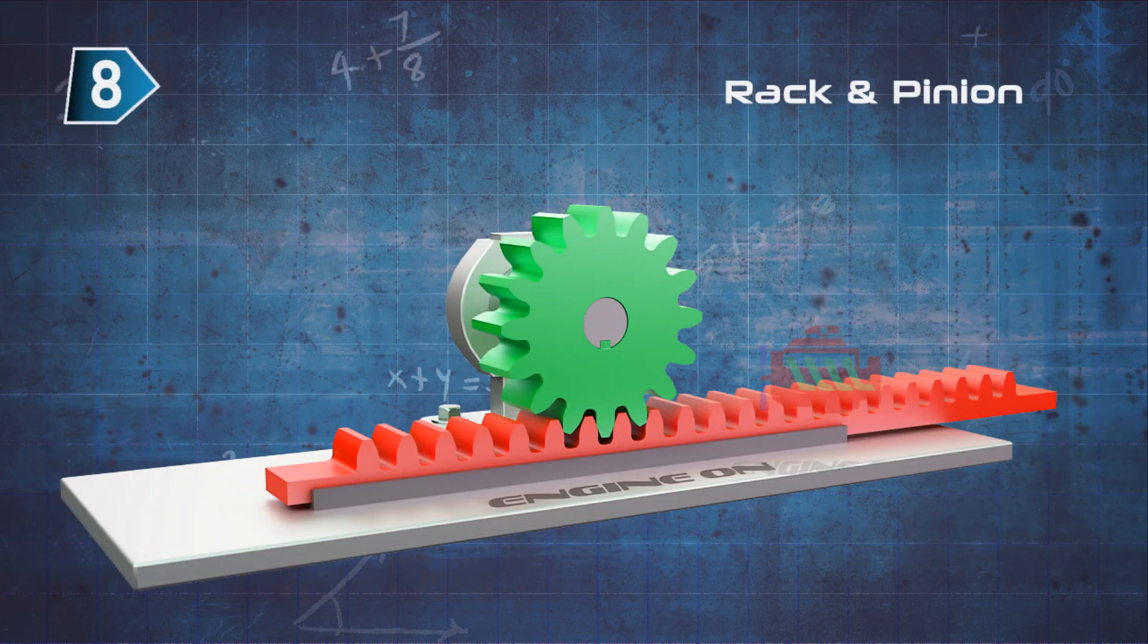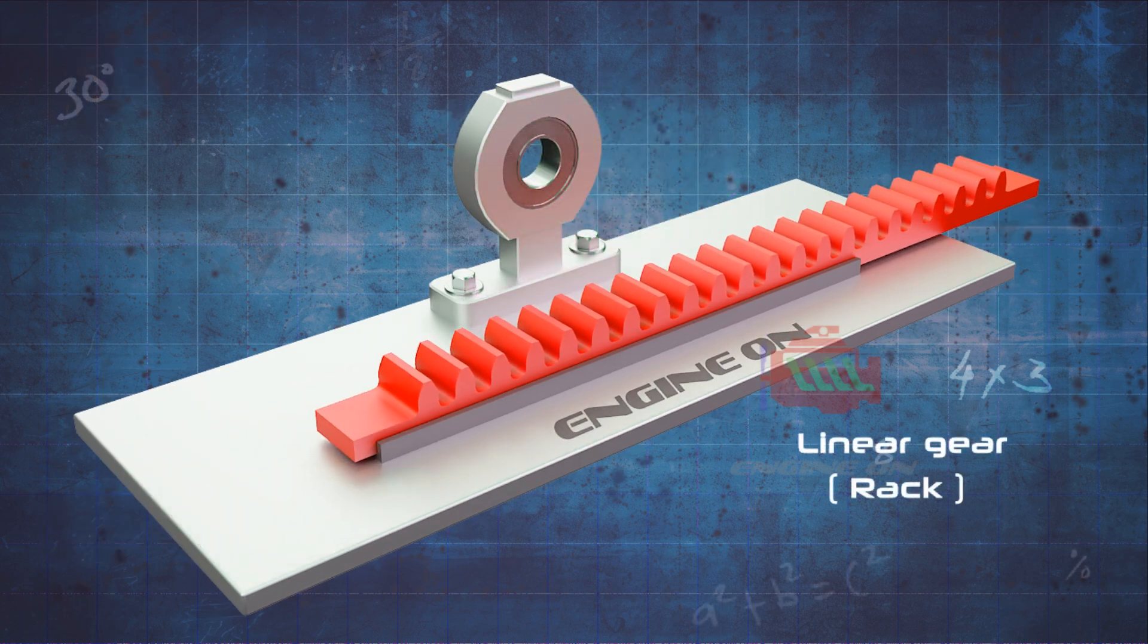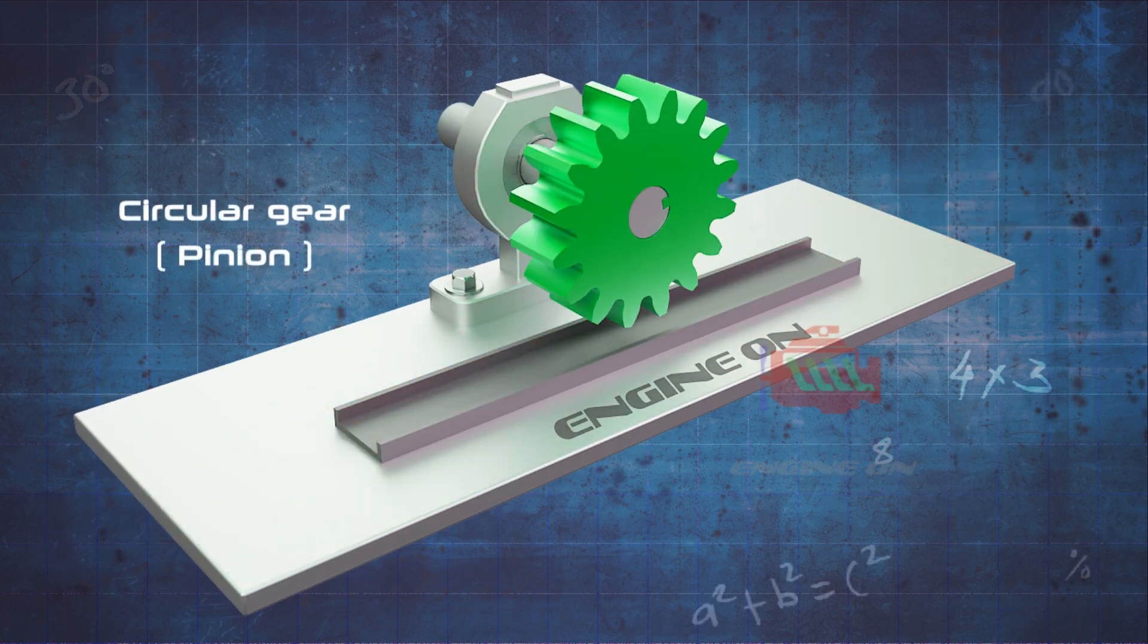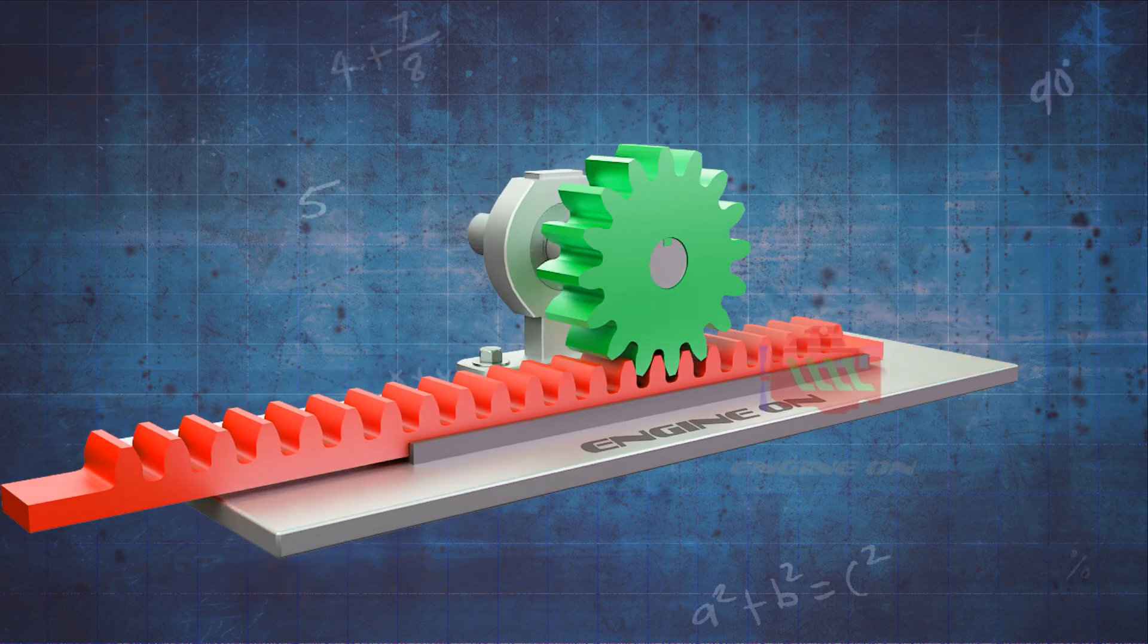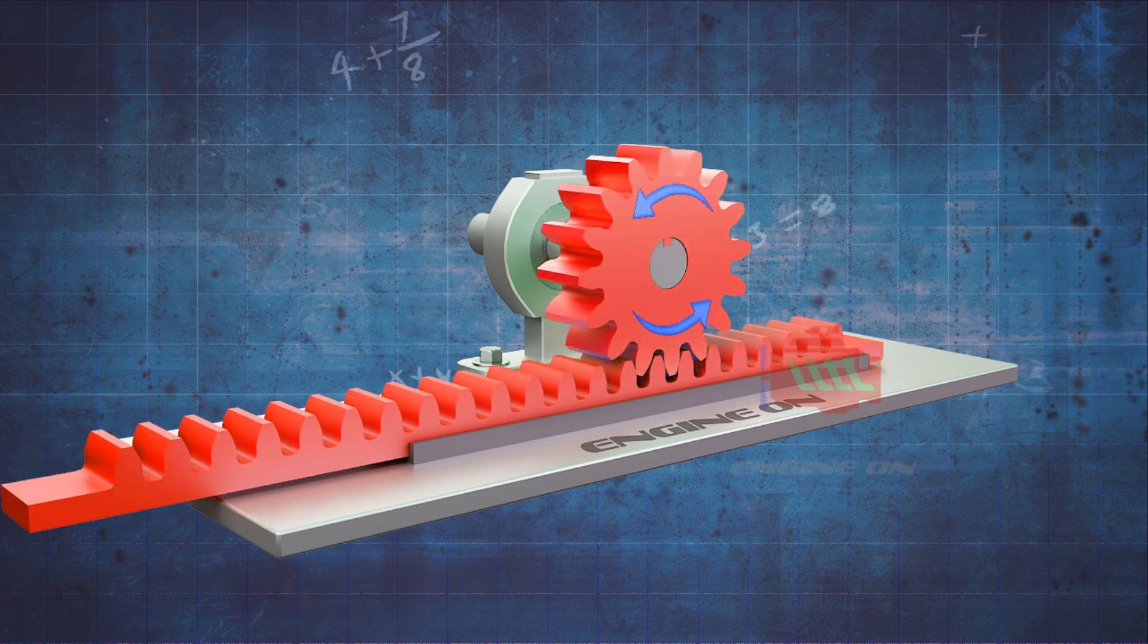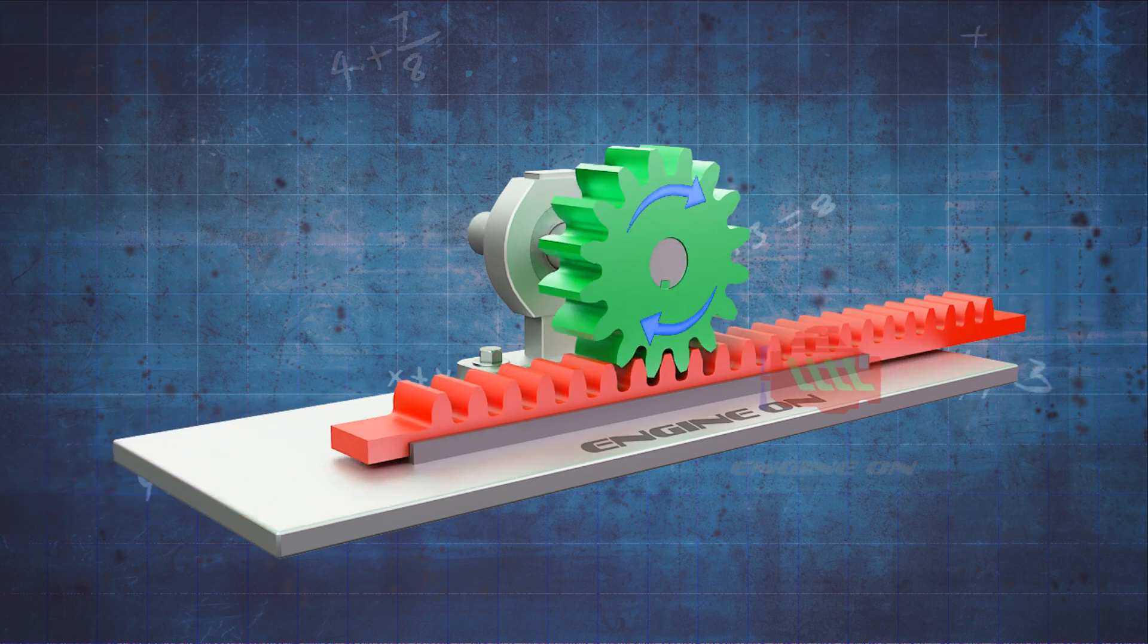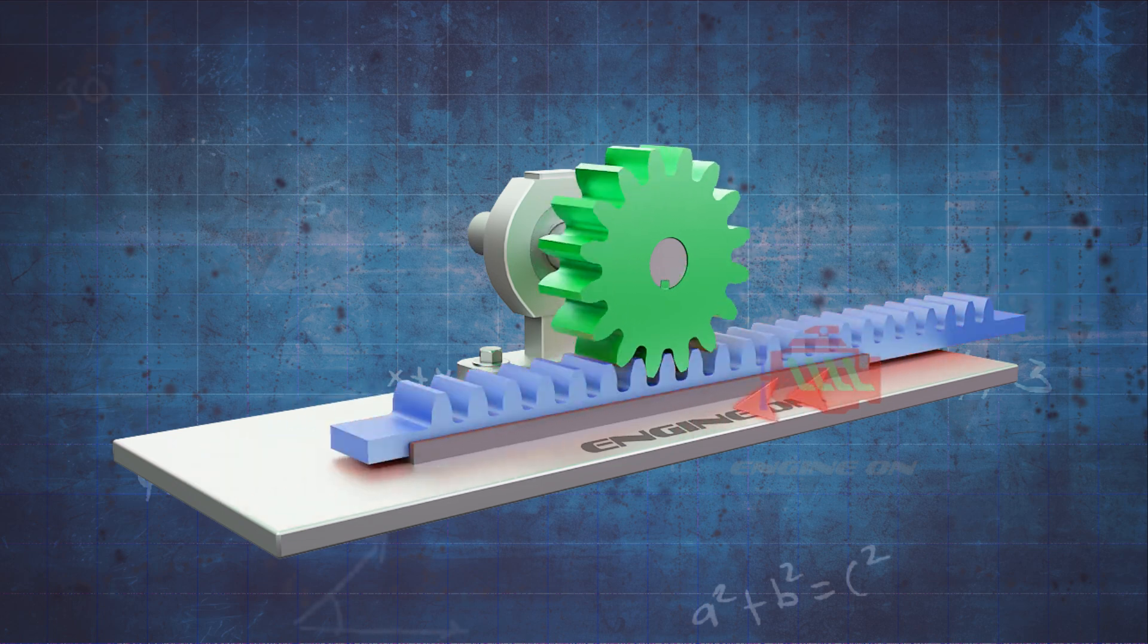A rack and pinion is a type of linear actuator that comprises a circular gear engaging a linear gear. Together, they convert between rotational motion and linear motion. Rotating the pinion causes the rack to be driven in a line. Conversely, moving the rack linearly will cause the pinion to rotate.